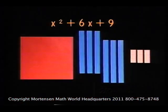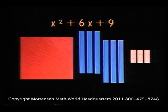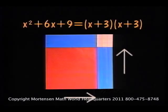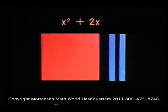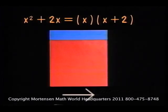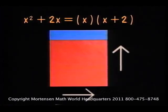x² + 6x + 9 equals (x + 3) and (x + 3). x² + 2x equals x and (x + 2). Good job.